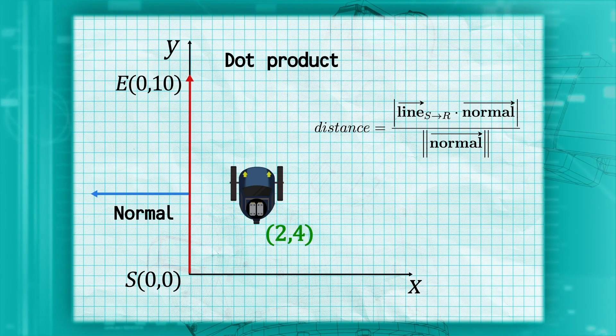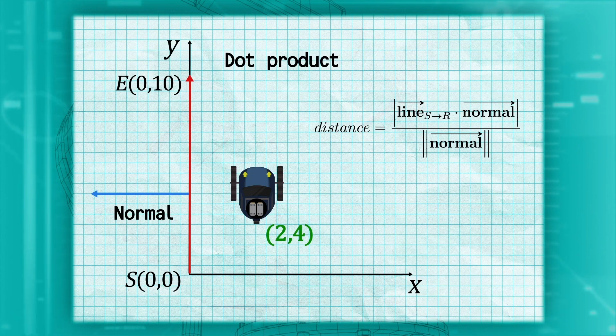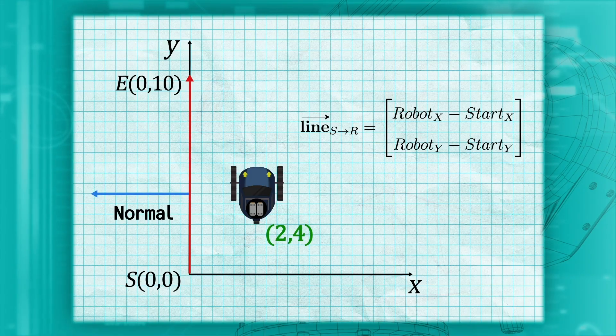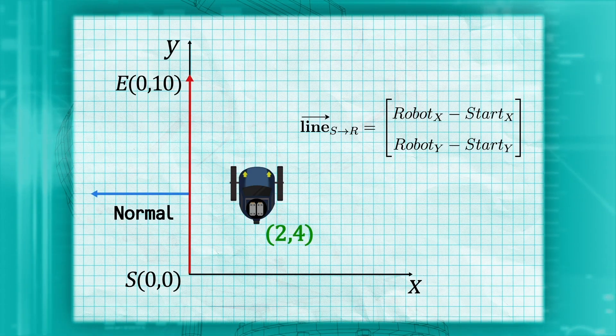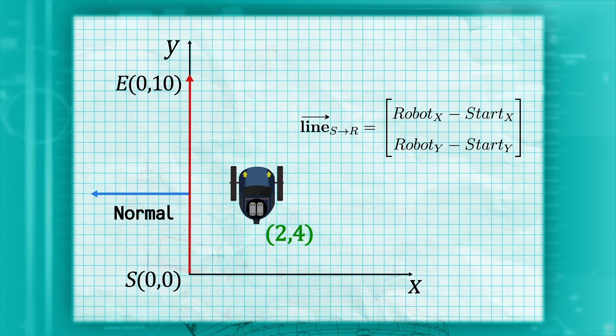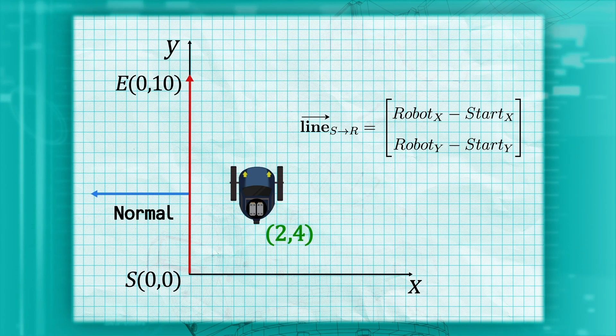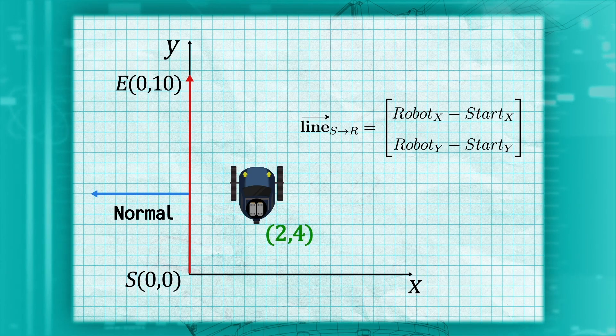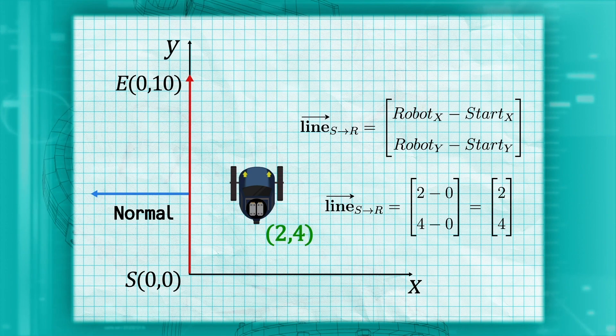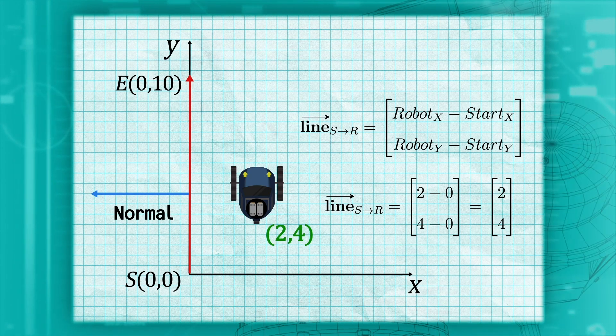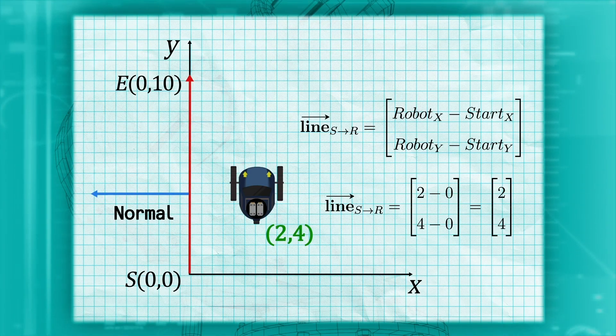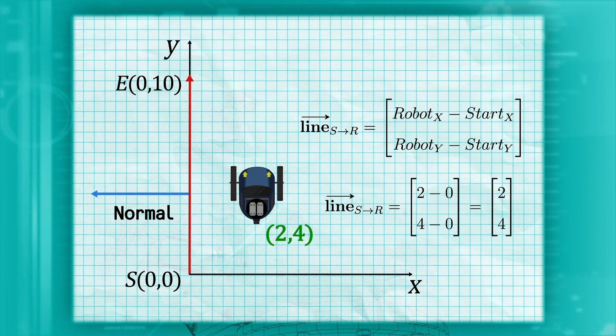Let's break this down into smaller parts. The first thing we need to do is find the line between the start point in our current position. We can make this line using the same vector notation we used for our trajectory line. We take the difference in our x coordinates for our first element and the difference in the y coordinates for our second element. Using our example of moving in the positive y direction and substituting in our two points, we get 2-0 for the top and 4-0 for the bottom, giving us 2 over 4 for our line from the start to the robot.